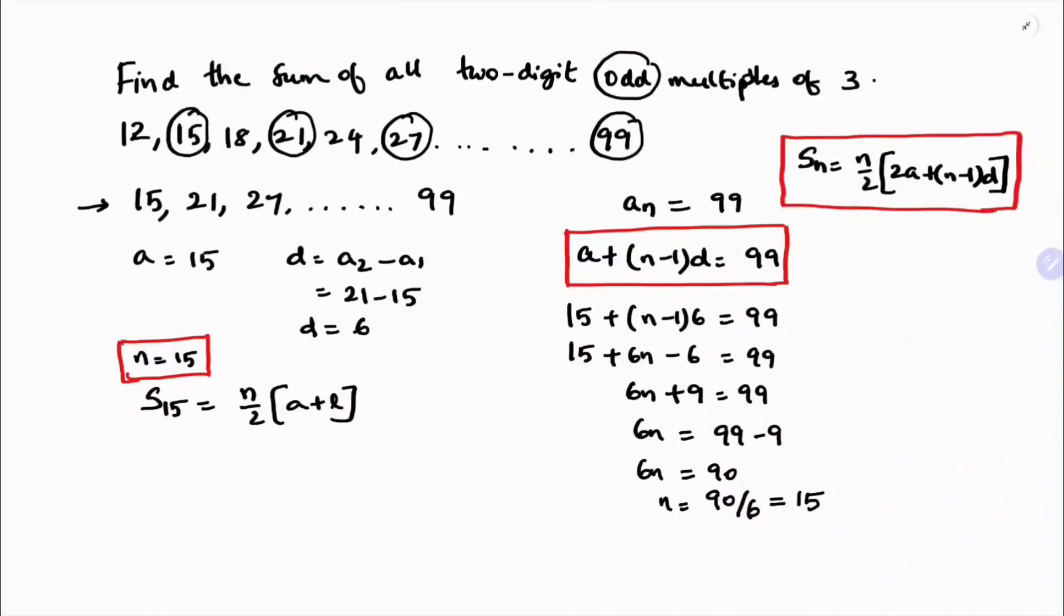15 by 2, where the first term is 15 and the last term is 99. So 15/2 times (15 + 99), which is 114.